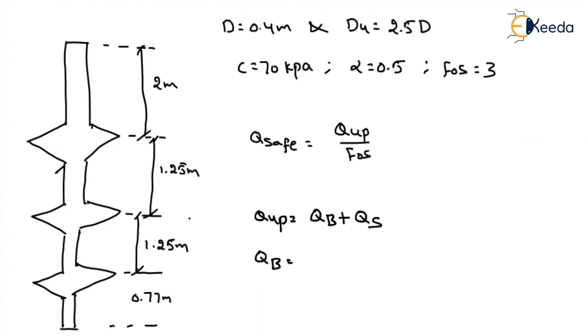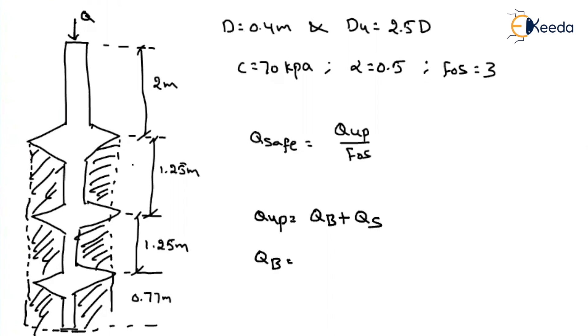That will be equal to, so if a load is applied on this, how this load will be resisted? The portion below the Under-Rimmed will behave like a soil. That means this entire portion will behave like a soil. That means up to the length of 2 meters. What is the diameter of the pile? That is given as 0.4 meter. But after the 2 meter distance that entire length of the pile behaved like having diameter of 2.5 times D. That means that will be equal to around 1 meter.